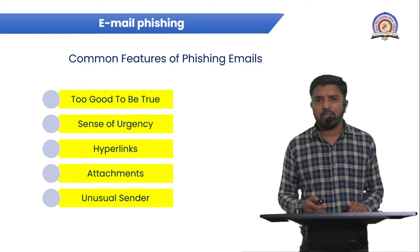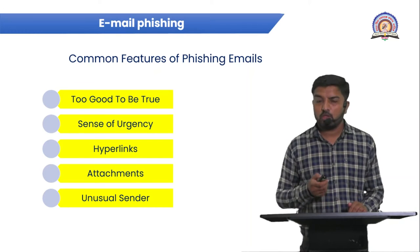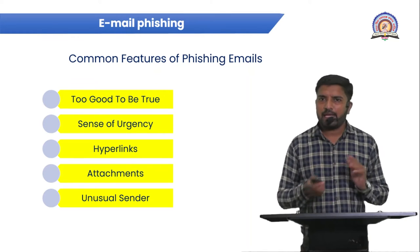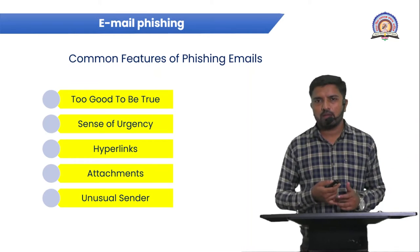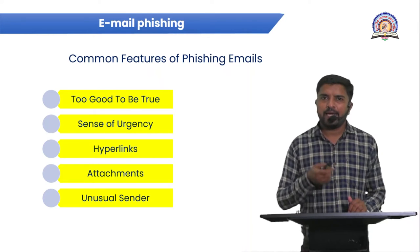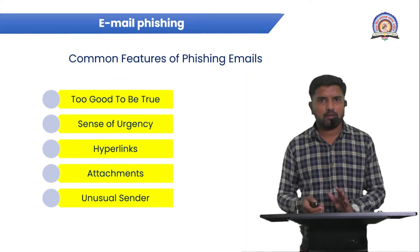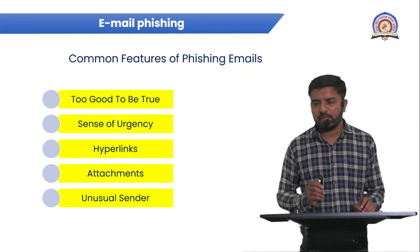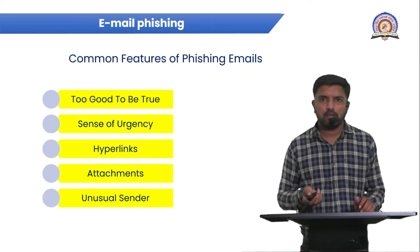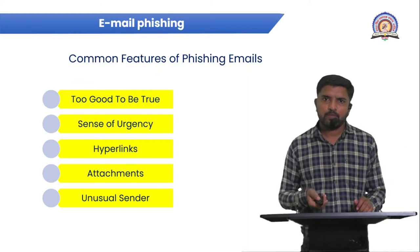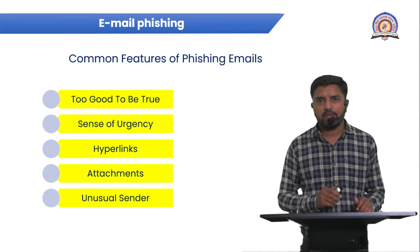Some common features of email phishing include: too good to be true offers, a sense of urgency, hyperlinks, attachments, and an unusual sender. Sometimes the hacker creates a duplicate website that looks like the original and contacts customers via email, telling them to switch to a new portal and share personal information for login. Whenever users reply with their data via hyperlinks or attachments, data loss occurs and security is compromised.